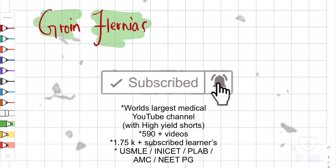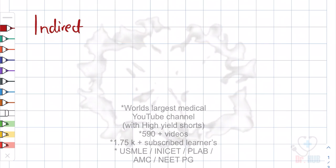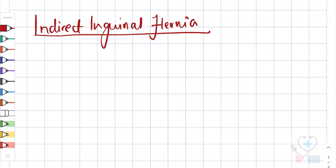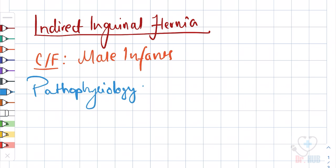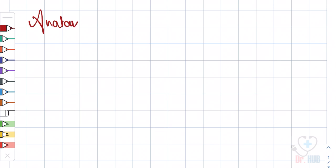Groin hernias. Indirect inguinal hernia. Clinical features: mainly in male infants. Pathophysiology is patent processus vaginalis. Anatomy: